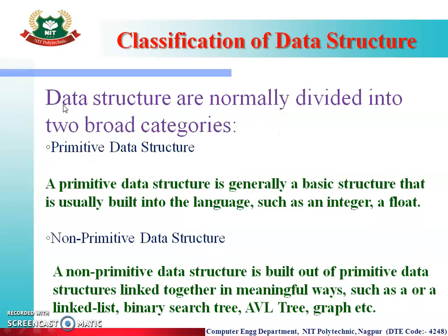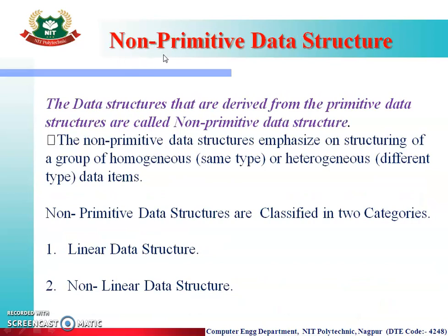As we have seen in the previous video, data structures are normally divided into two broad categories. One is primitive data structures and the other is non-primitive data structures. Primitive data structures are the basic structures that any programming language provides, like integer, float, character, and pointer. Non-primitive data structures are derived from the primitive data structures. The data structures that are derived from primitive data structures are called non-primitive data structures.